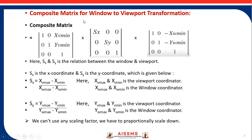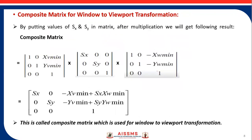The composite matrix for window to viewport transformation is computed by matrix multiplication. Since following the whole procedure every time is time-consuming, a composite matrix is calculated as a single matrix. If you need to transform world coordinates into viewport coordinates, you can do so using just this one matrix.